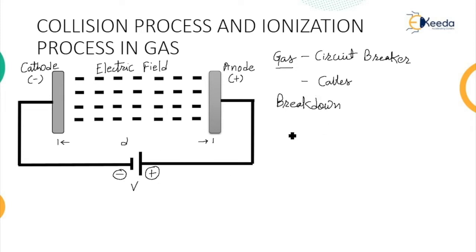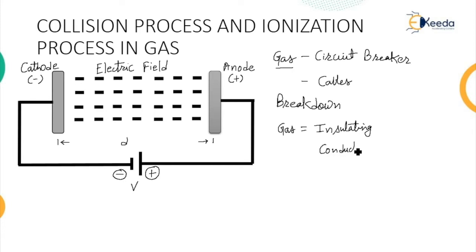So initially the gas acts as an insulating material, and due to the completion of the ionization process, that insulating gas becomes conducting gas. This conducting gas then experiences breakdown, and that is called the breakdown of insulating material. Let us now understand this process of ionization.